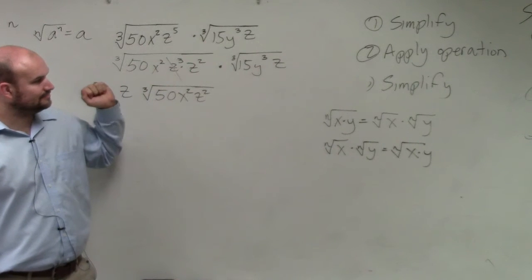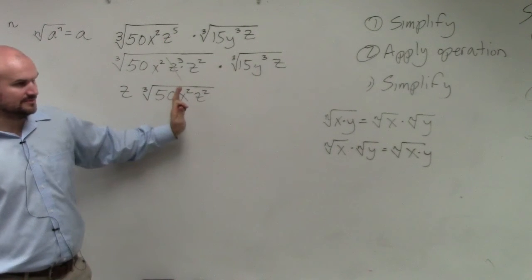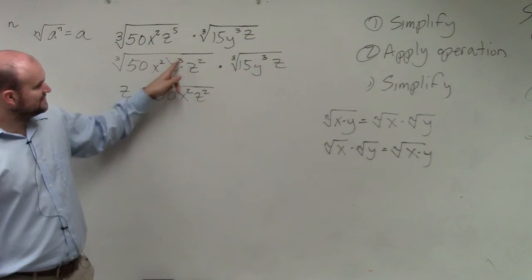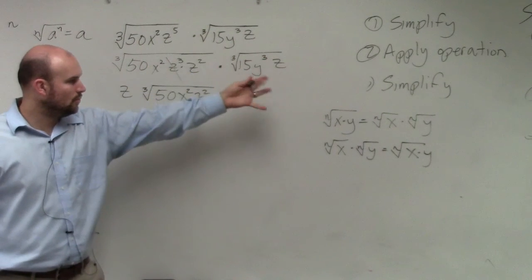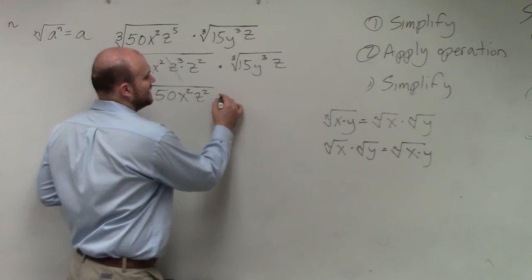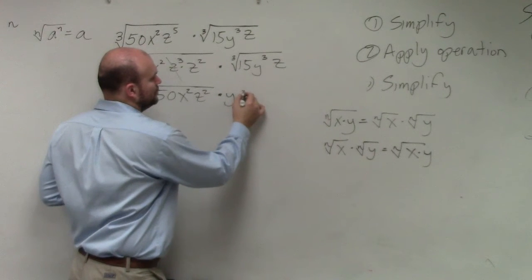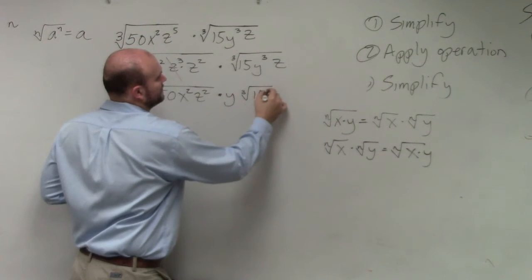Over here, I said this one. The cube root of z cubed is just z. The cube root of y cubed is y. So I have times y cube root 15z.